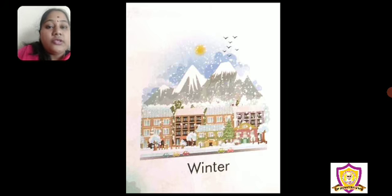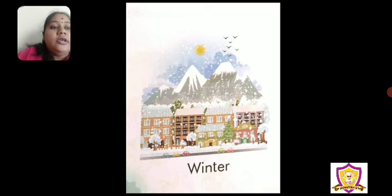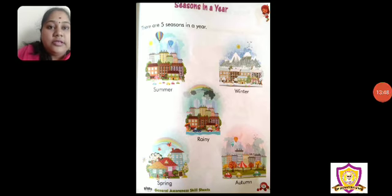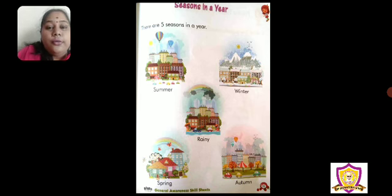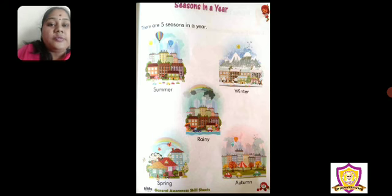So these are the five seasons which are there in a year and which are given in this topic. These seasons — summer, winter, rainy, spring, and autumn — form a cycle. You have to remember how many seasons are there in a year: five seasons. And you have to learn the names of the seasons.